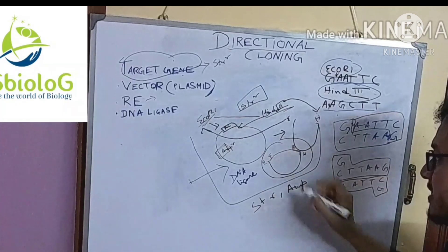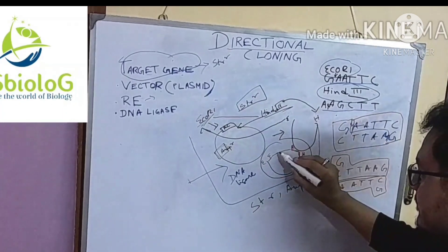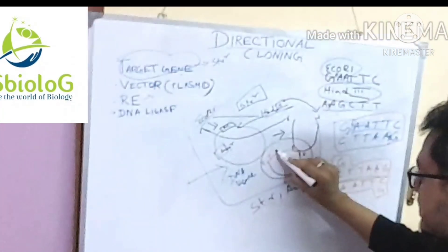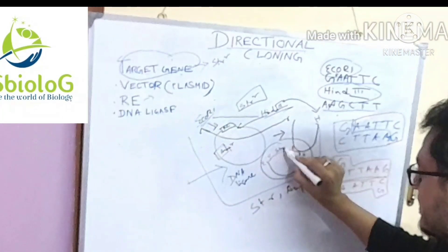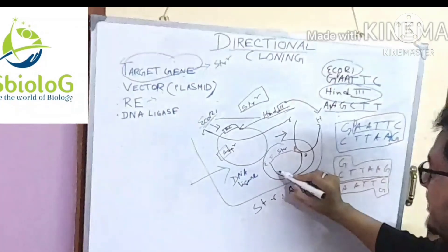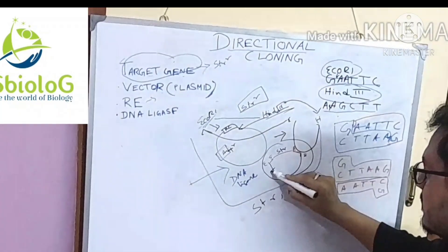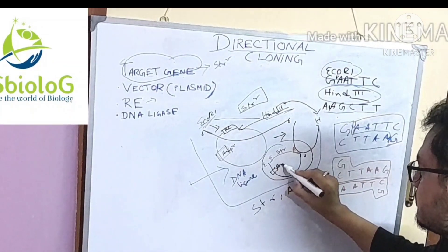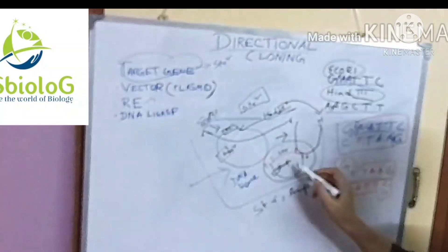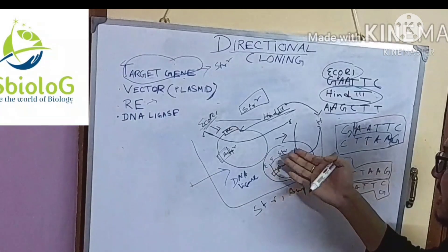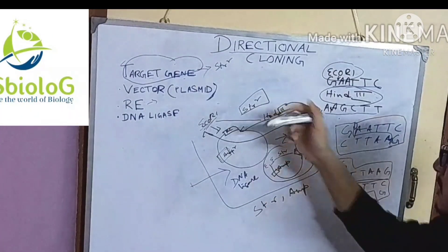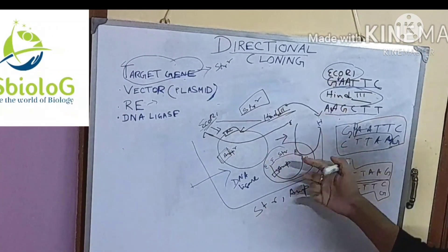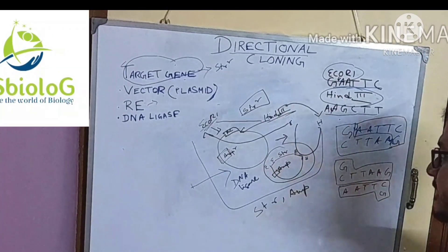Only the cells containing the recombinant plasmid — which has both the target gene with streptomycin resistance and the vector with ampicillin resistance gene — will survive. That's how the cloned product is screened.